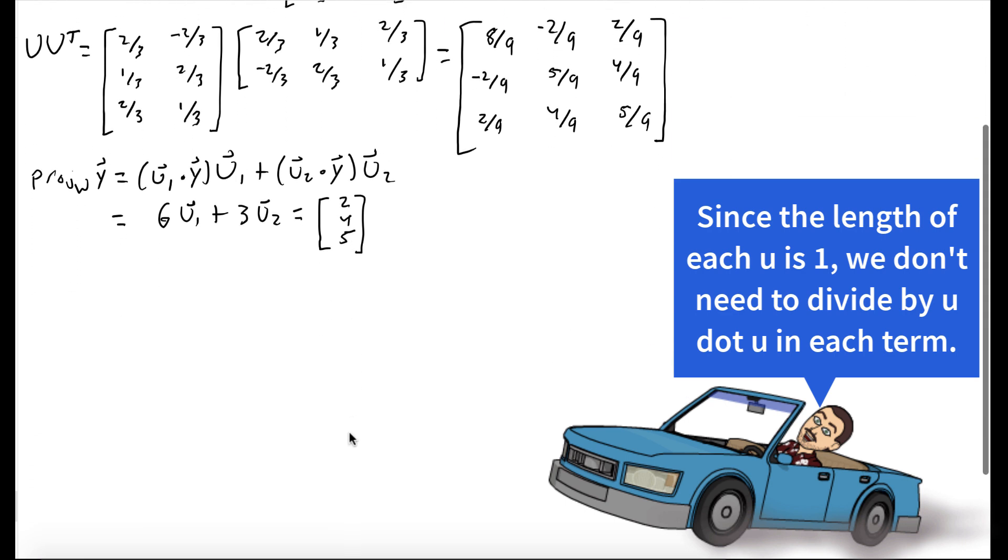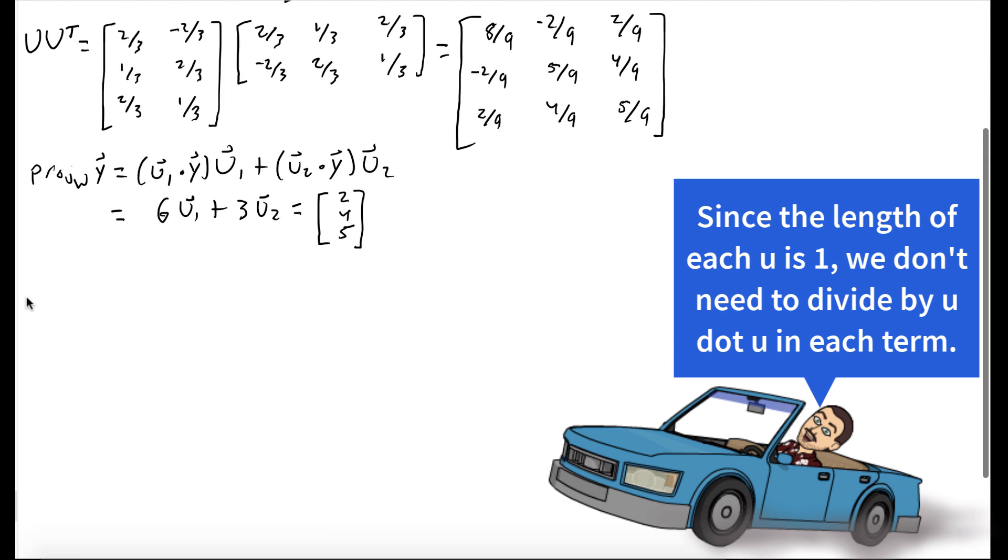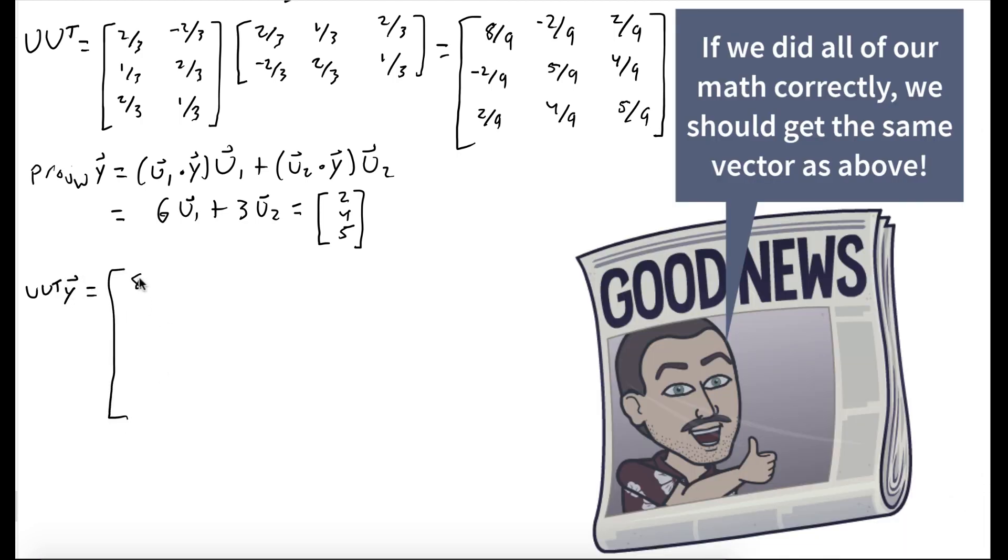And our theorem says this should be the same vector as when you multiply UU^T times y. So we're just verifying that we got the right solution. We write out UU^T, multiply it to the vector y, which is [4, 8, 1]. And you can see we get [2, 4, 5], as expected.